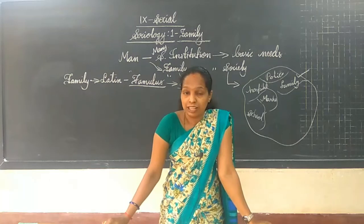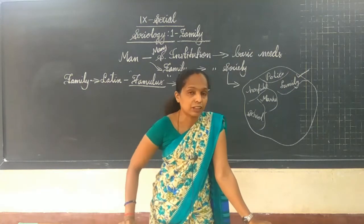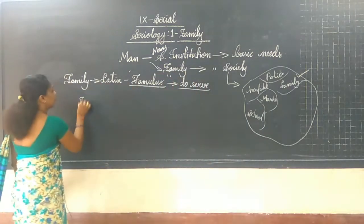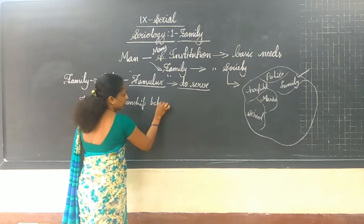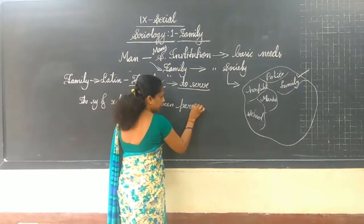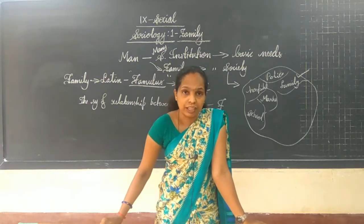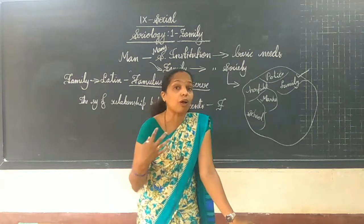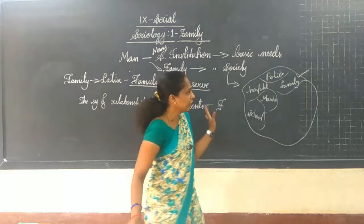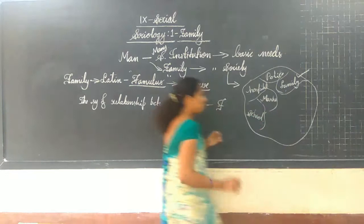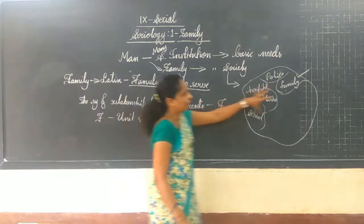We can also call family a system of relationship. That means a husband and wife, along with or without their children, living together for a long period of time, can be called a family. A family is considered a unit of society — it is a small part of a society.